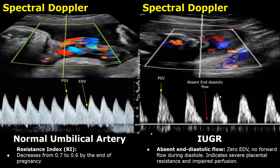In the image on the right, we have a case of fetal growth restriction, or IUGR, which stands for intrauterine growth restriction. If we look at the spectral Doppler waveform in this umbilical artery, we see an abnormality. There is a gap between each waveform because the end-diastolic velocity is 0. After the sharp peak, we were supposed to see a small amplitude of forward diastolic flow, but here we see none — the EDV is 0. There is no forward flow during diastole. This type of appearance indicates severe placental resistance and impaired perfusion.